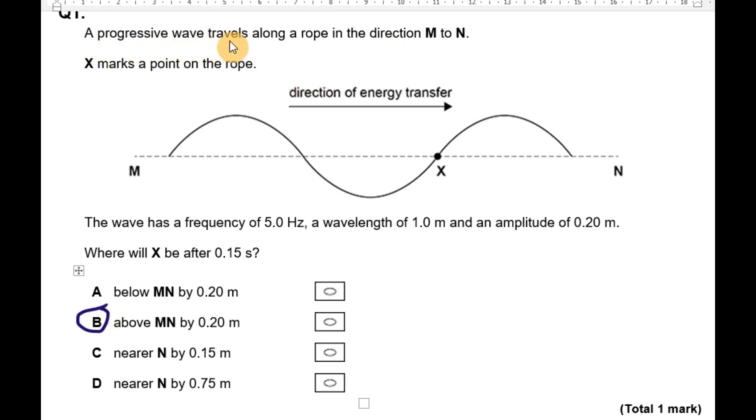A progressive wave travels along a rope in the direction M to N. X marks a point on the rope. The wave has a frequency of 5 Hertz, a wavelength of 1 meter, and an amplitude of 0.2 meters.